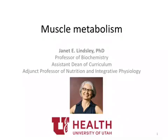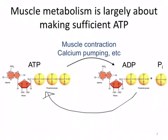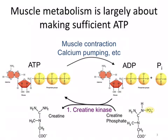Welcome to this mini-lecture on muscle metabolism. Muscle contraction and the pumping of calcium back into the sarcoplasmic reticulum uses a lot of ATP. Therefore, one of the major themes in muscle metabolism, and the one we'll be focusing on here, is how muscles constantly can resynthesize large amounts of ATP from ADP and phosphate.